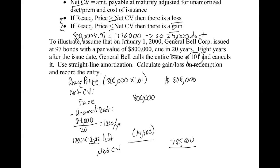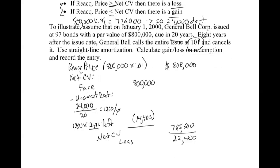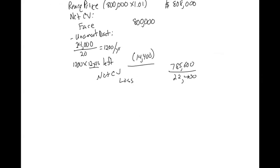The reacquisition price of $808,000 is greater than the net carrying value of $785,600, so it's going to be a loss of $22,400. The reason I like setting up this template is because all the numbers — except the net carrying value subtotal — are going to feed directly into my journal entry.